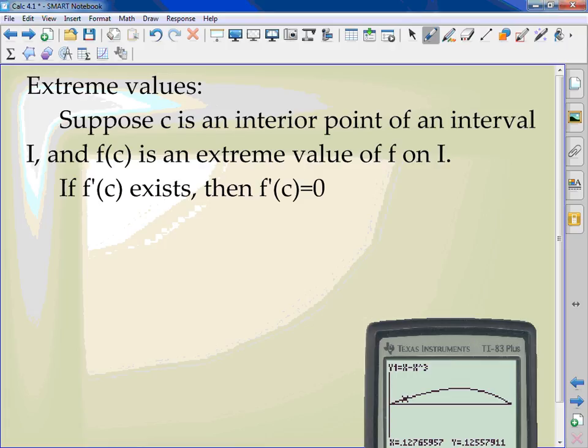What all three of those are called, those are my extreme values. Suppose c is an interior point of an interval i. And f of c is an extreme value of f on i. If f prime exists, then f prime of c is 0. Write it down. I'll show you some examples.